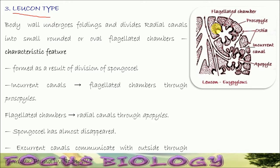Leucon type. Here, the body wall undergoes extensive foldings which divide radial canals into small rounded or oval flagellated chambers. You can see these are flagellated chambers — these are rounded, you can see oval chambers. These are the characteristic feature of Leucon type: the presence of oval flagellated chambers.